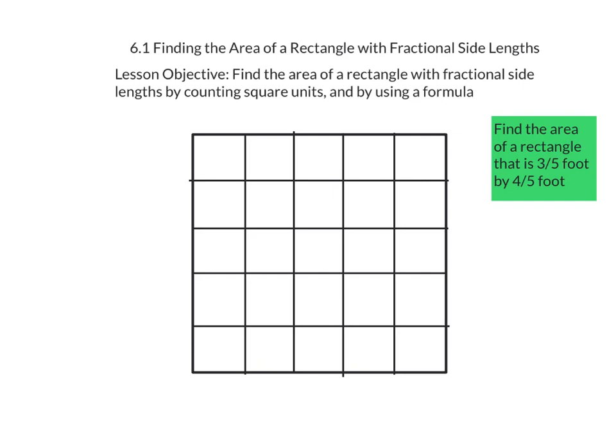One of our side lengths is 3/5 of a foot and so we're going to label on the top 3/5. So we have 3 out of the 5 pieces going across. On the other side, we can use that to represent our 4/5 foot. So we're going to count 1, 2, 3, 4 out of the 5 pieces and label that 4/5.